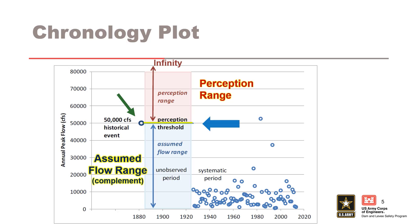Shown here is a chronology plot which graphically displays the perception threshold concept. The perception threshold flow is assigned during a period when we have no direct flood observations. In this example, the perception threshold is based on knowledge that the historical event is the largest known flood during the historic period. This means that all of the unobserved annual maximum flows during the historic period must have been less than this largest historical event. The perception range defines the region where floods would have been observed and recorded had they occurred. The flow range defines the range of flows that did occur during the historic period, given the knowledge that no floods exceeded the threshold since no floods were recorded.